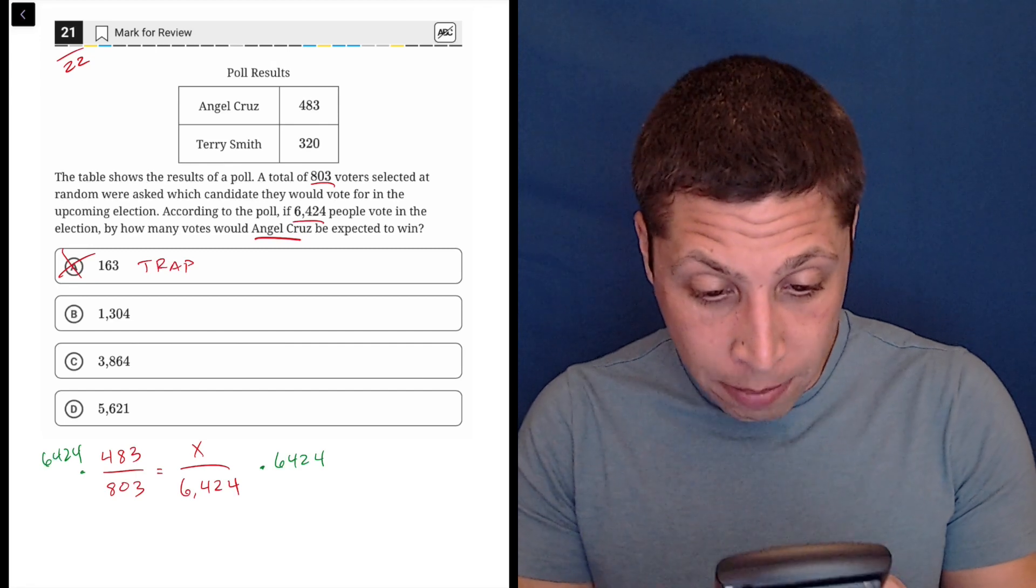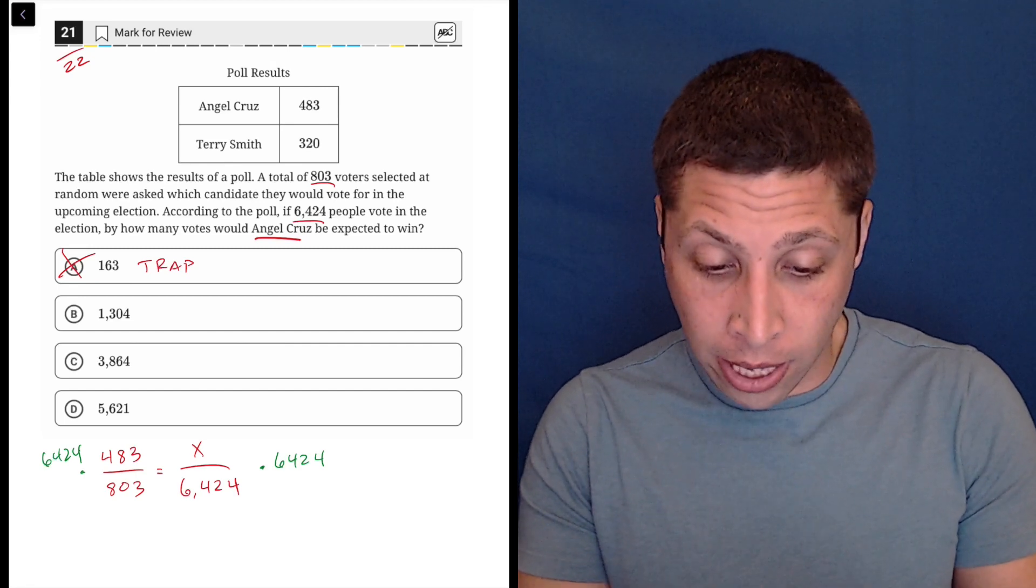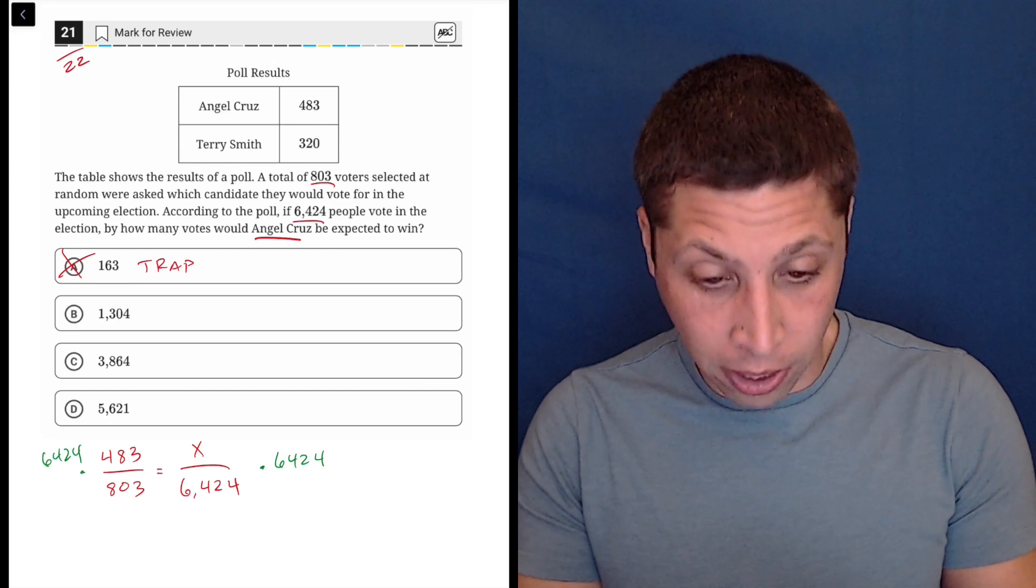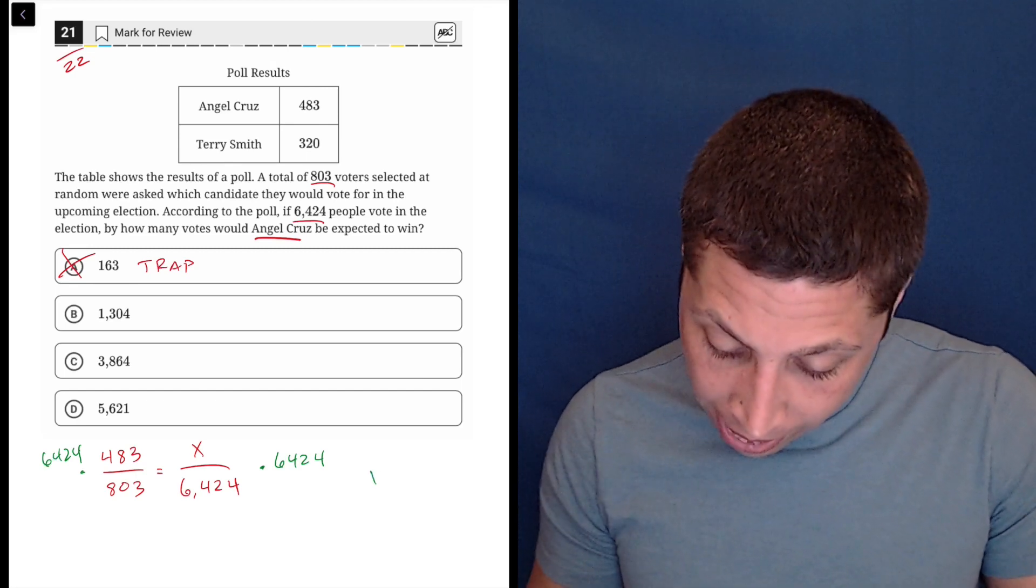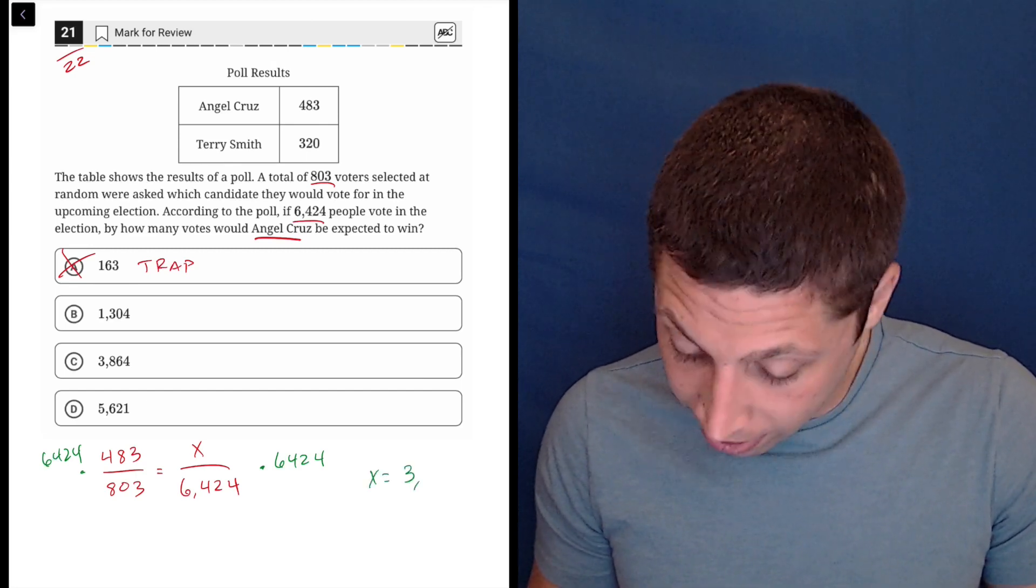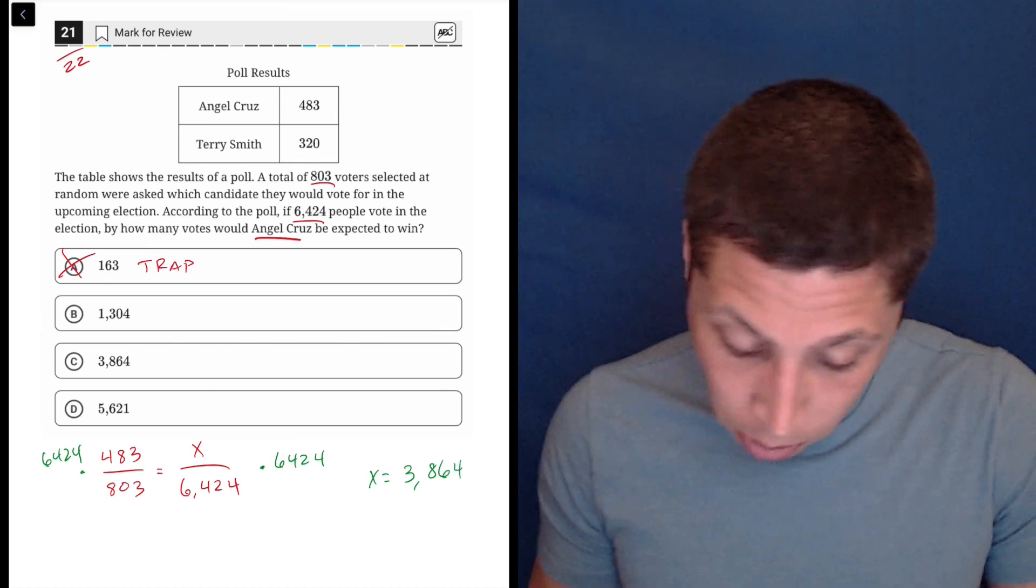And that's 3,102,792, which we're going to divide by 803 to get that X is 3,864.